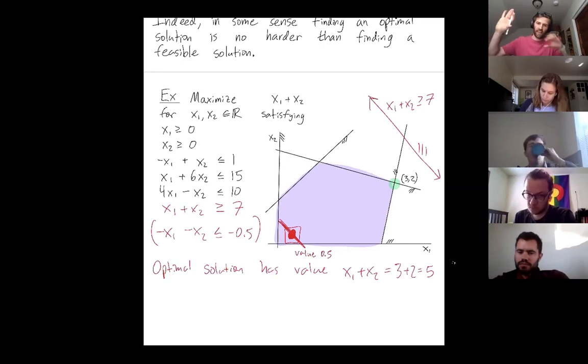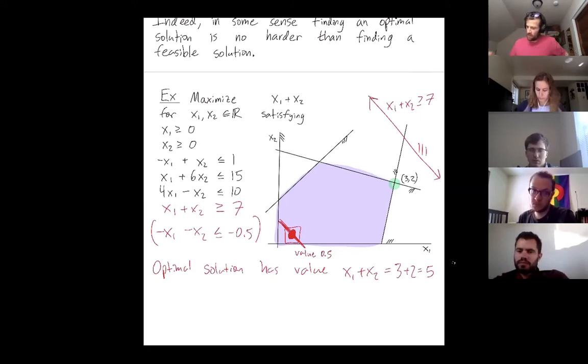Because I can never be to the right of this new constraint, right, and still be in my feasible solution. So I have no solutions. So 7 was a little ambitious, right? So 0.5 I could achieve. 7 was too ambitious. And now I can just do a binary search. So why don't we try 2?